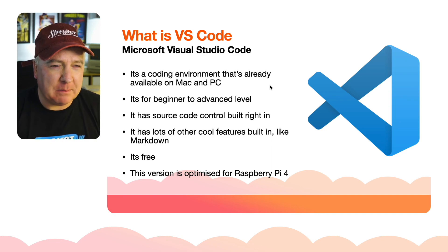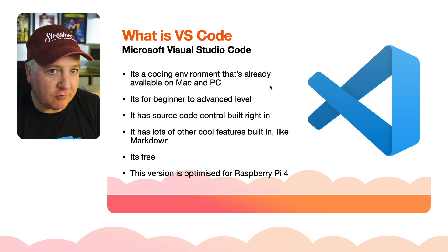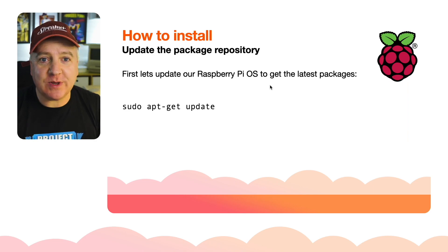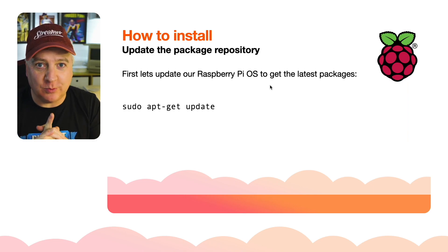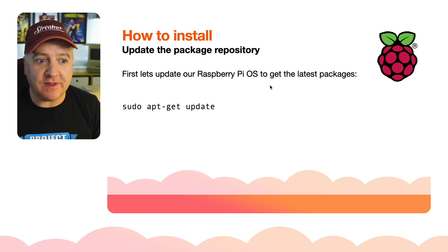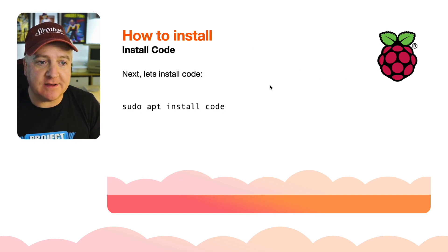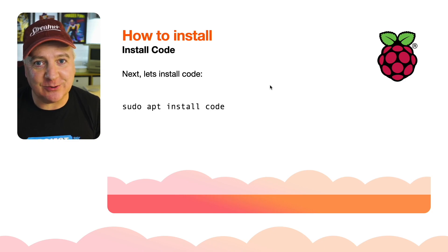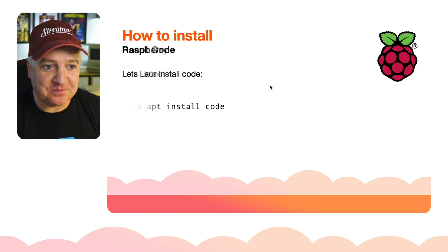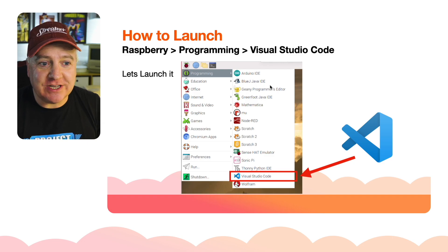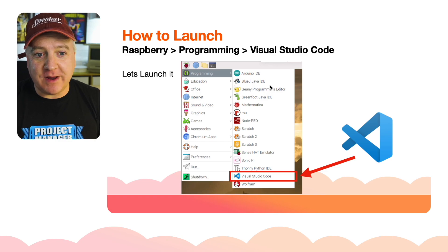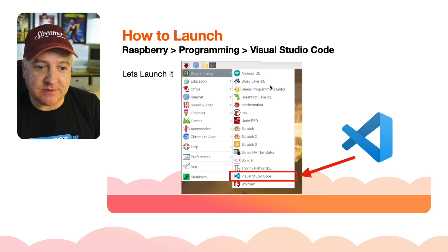I believe it's 64-bit. So how do we install it? Very easy to do. First you run 'sudo apt-get update' — you can also do 'sudo apt update', it's the same thing. Then to install it: 'sudo apt install code'. Simple as that. To launch it, click the Raspberry Pi start button, go to Programming, and at the bottom you'll see Visual Studio Code.